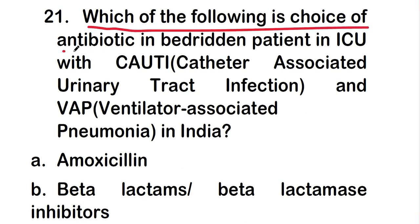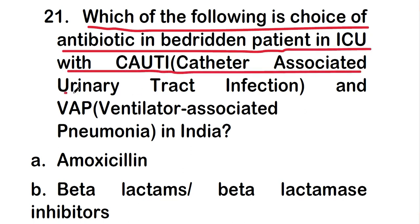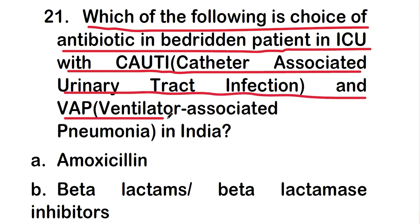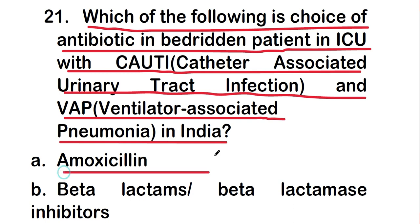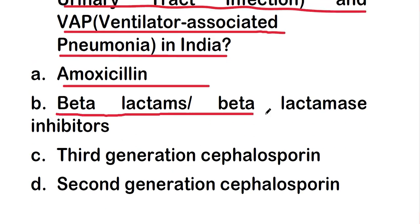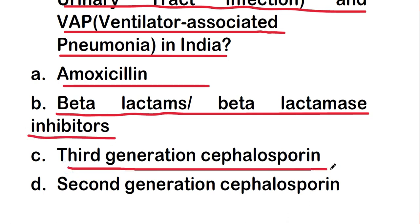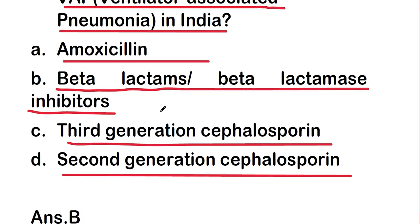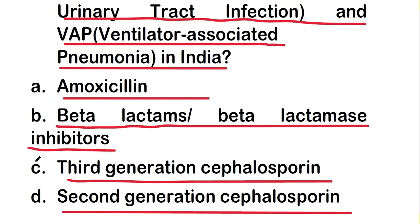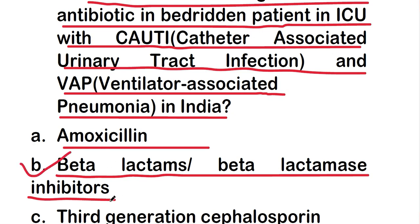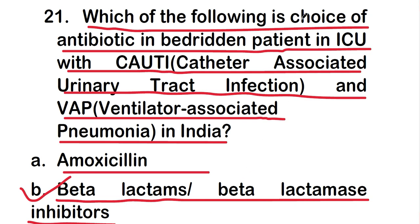The first question is: which of the following is the choice of antibiotic in a bed-ridden patient in ICU with CAUTI (catheter associated urinary tract infection) and VAP (ventilator associated pneumonia) in India? Options are: amoxicillin, beta-lactams and/or beta-lactamase inhibitors, third generation cephalosporin, or second generation cephalosporin. The right answer is option B — beta-lactams and/or beta-lactamase inhibitors.